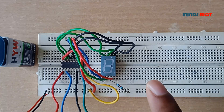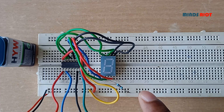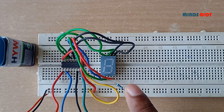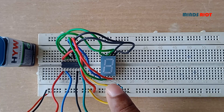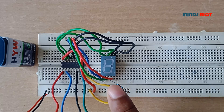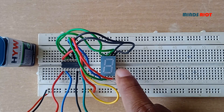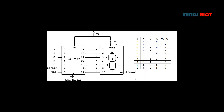In this video, a BCD to 7-segment decoder is built on a breadboard using IC7447 and a common anode 7-segment display. For common anode displays, IC7447 is used, and for common cathode displays, IC7448 is used. This is the connection diagram of IC7447 and the common anode 7-segment display.